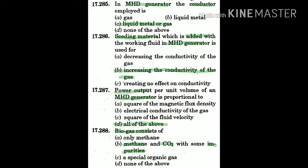Question 288: Biogas consists of — the answer is B: methane and CO₂ with some impurities. Biogas contains methane and CO₂ with some impurities.